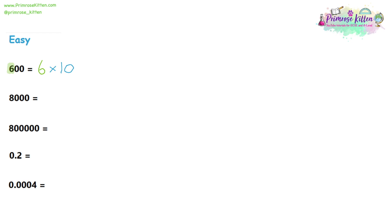So we know this first question is going to have a 6, and then it's going to be times 10 to the something. After the 6, we have got 2 places. So that means it'll be 6 times 10 to the 2. Let's do the same thing for question 2. Identify the first number — there are no other numbers, no decimal places here. It's always going to be multiplied by 10 for standard form. Count up how many places: 1, 2, and 3. So the answer will be 8 times 10 to the power of 3. If you don't believe me, type it into your calculator — that will give you 8,000.